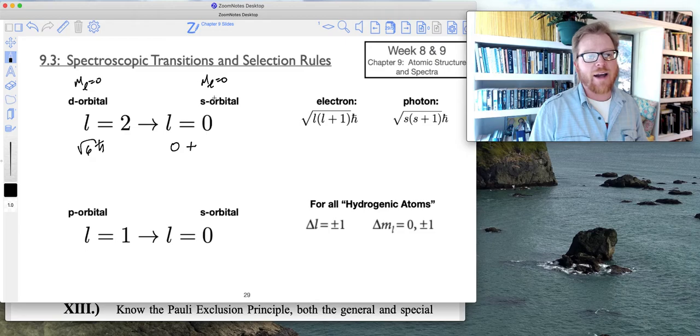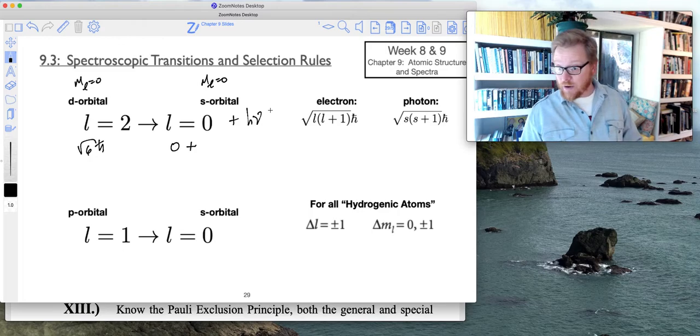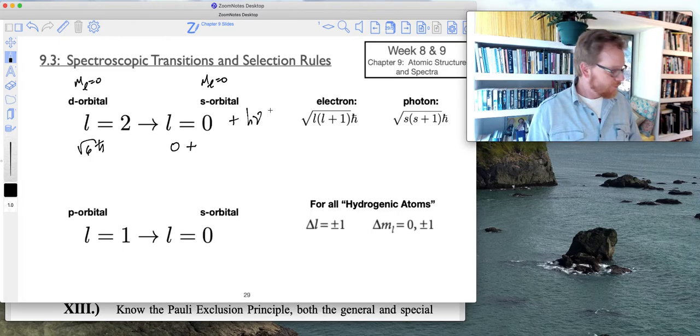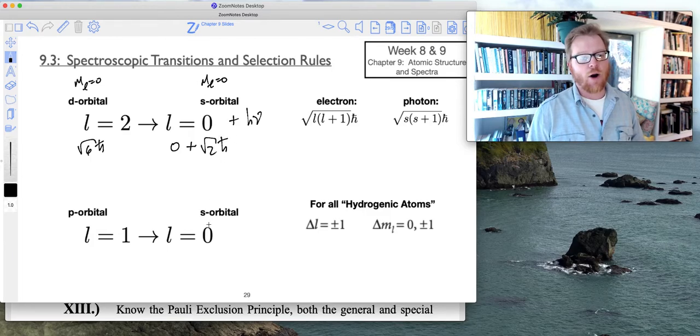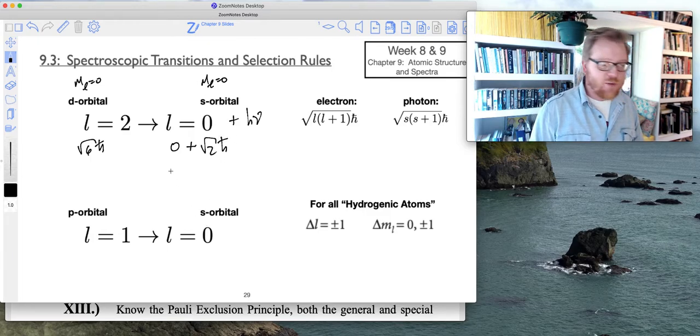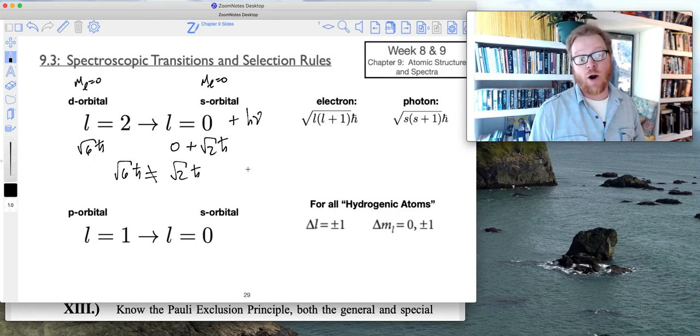But there's also an emitted photon as a result, because if it's going from a higher energy to a low energy, we've got l_2 goes to l_1 plus hν. A photon is emitted, and that's going to be plus an additional √2 ℏ. So as you can see, √6 ℏ does not equal √2 ℏ, so as a result this is a forbidden transition.